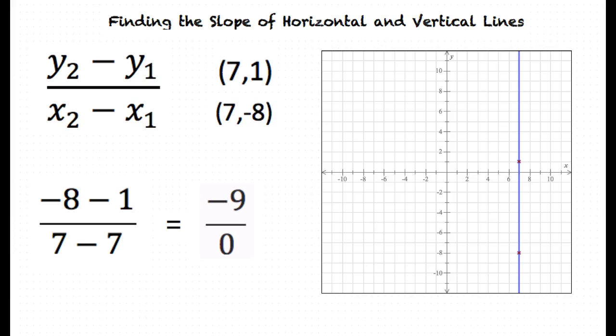Wait, negative 9 over 0? But we can't divide by 0, right? That is right. We cannot divide by 0 because we cannot divide negative 9 into 0 groups because negative 9 is already one group.